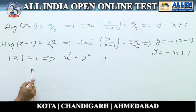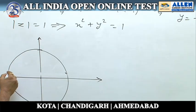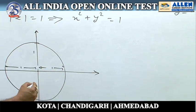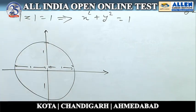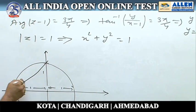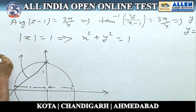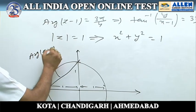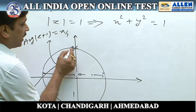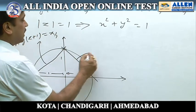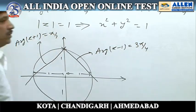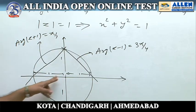Now if we draw the graph in the xy-plane, we have a circle of radius 1. The line y = x + 1 represents the argument of (z+1) = π/4, and the line y = −x + 1 represents the argument of (z−1) = 3π/4. The circle has center at the origin and radius 1.